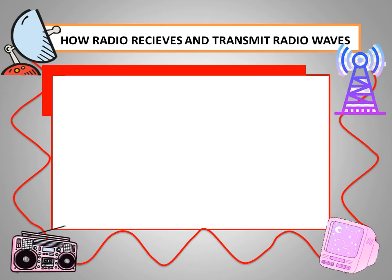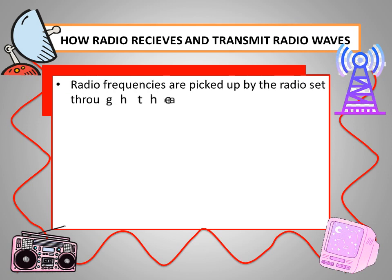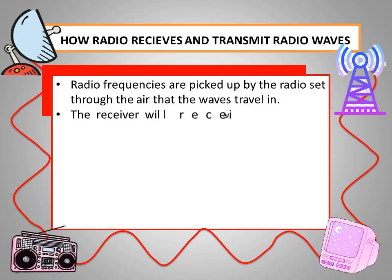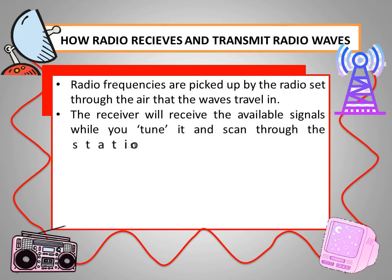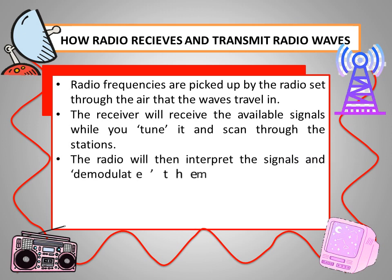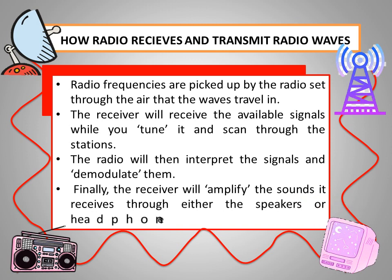How does radio receive and transmit radio waves? Radio frequencies are picked up by the radio set through the air that the waves travel in. The receiver will receive the available signals while you tune it and scan through the stations. The radio will then interpret the signals and demodulate them. Finally, the receiver will amplify the sound through either the speaker or headphone socket. That's how the radio receives and transmits radio waves.